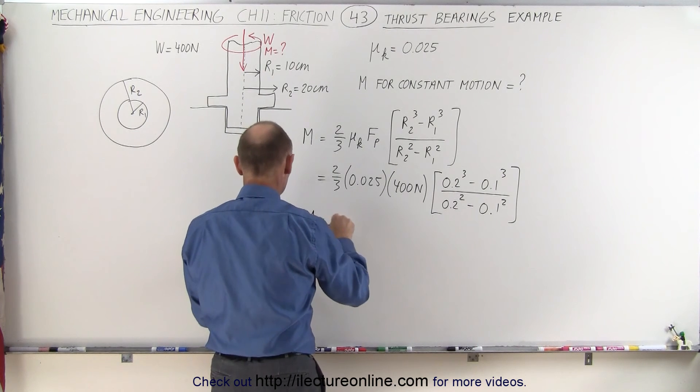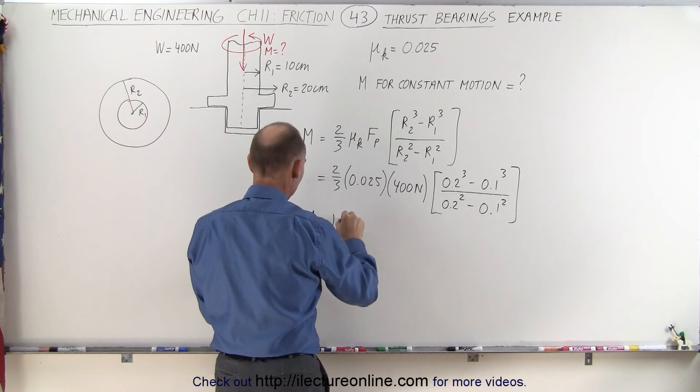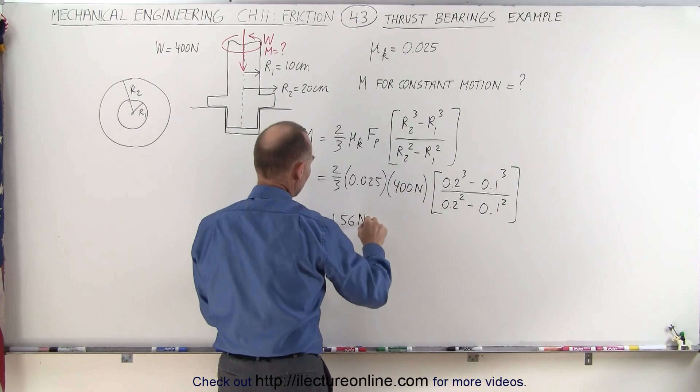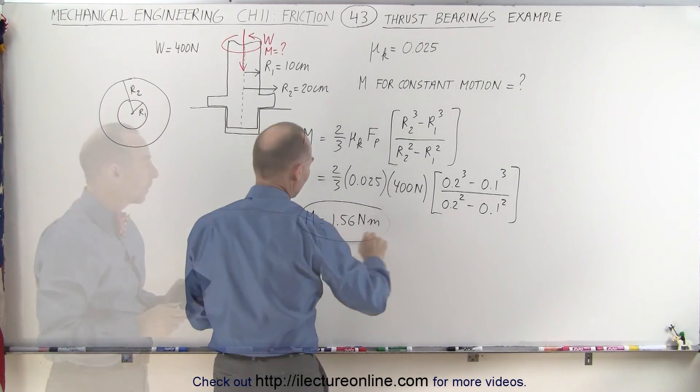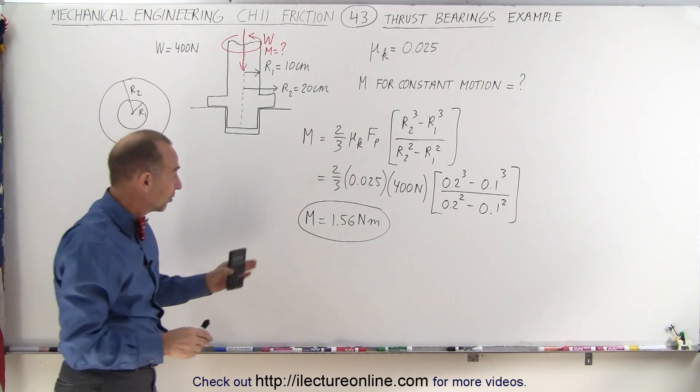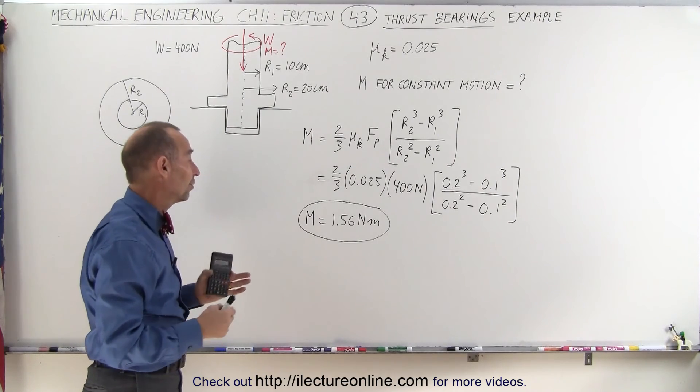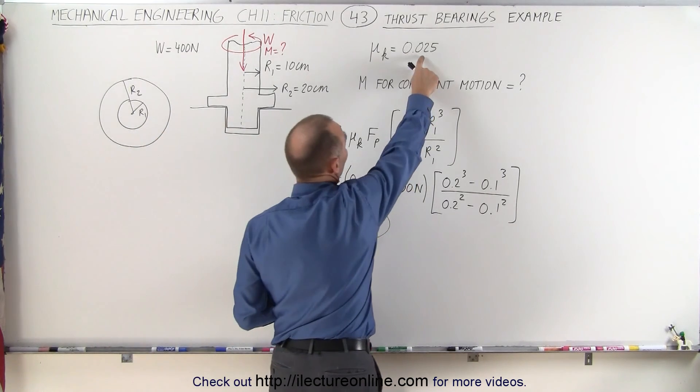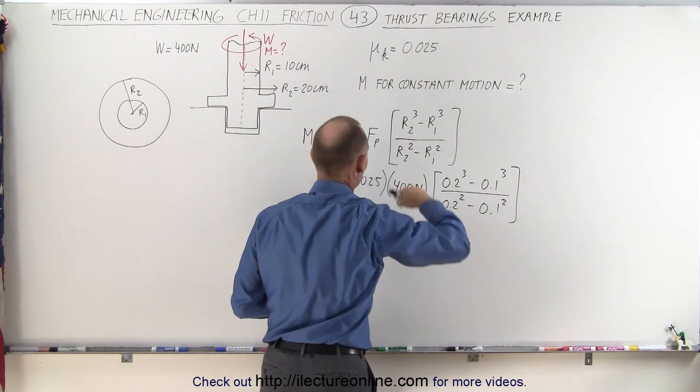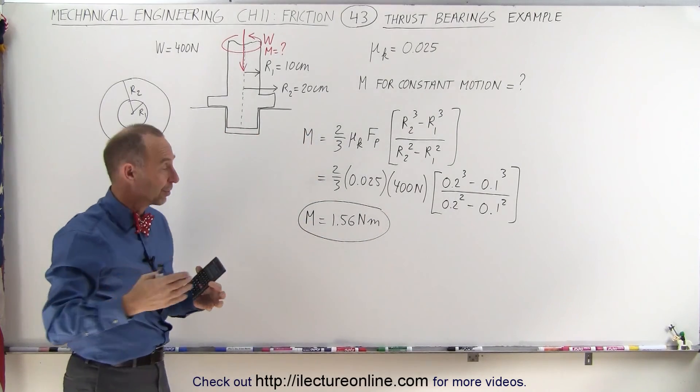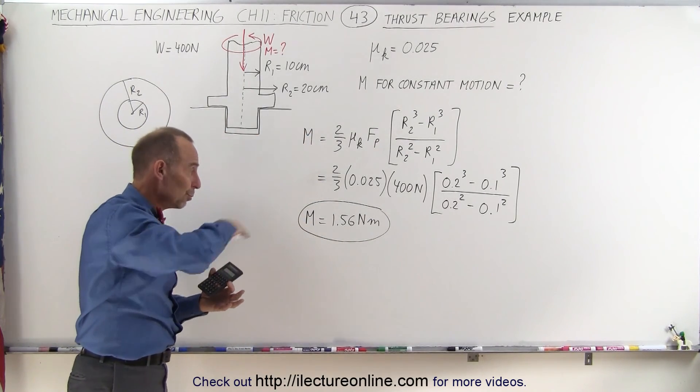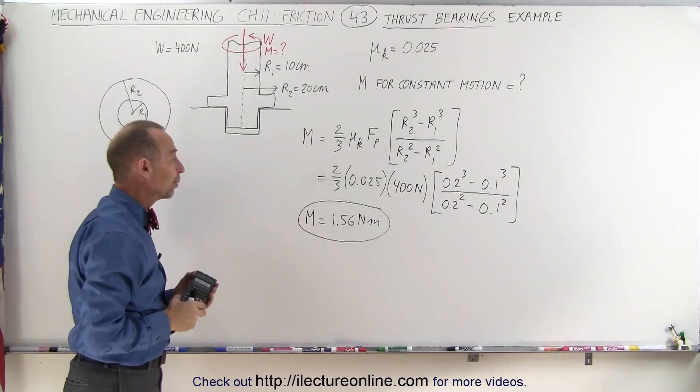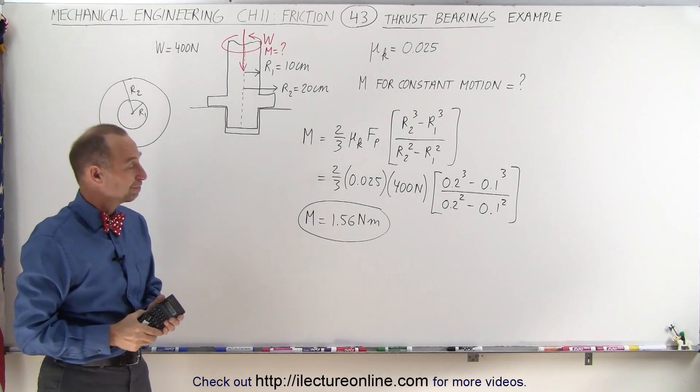and that gives us not a lot of moment. Moment is equal to 1.56 newton meters. The reason why this is a relatively small number is the coefficient of kinetic friction is a very small number 0.025, which means the moment required to keep the axle moving is just a mere 1.56 newton meters. And that's how we do it.